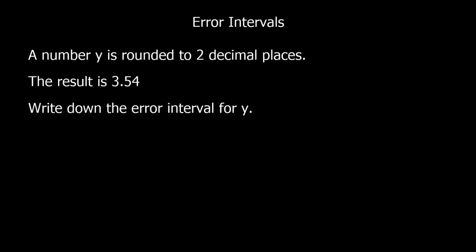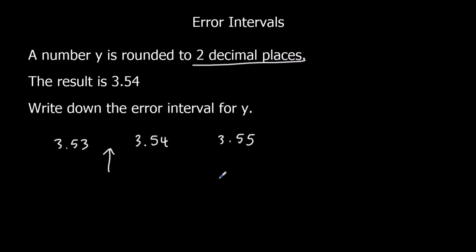Here we've got another question — if you want to pause the video and give it a go, you can, otherwise keep watching. A number y is rounded to two decimal places. The result is 3.54. Write down the error interval for y. So we write down 3.54, rounded to two decimal places. What comes before 3.54? 3.53. And what comes after 3.54? 3.55. Our lower bound, halfway in between 3.53 and 3.54, that's 3.535. And our upper bound, halfway between 3.54 and 3.55, is 3.545.